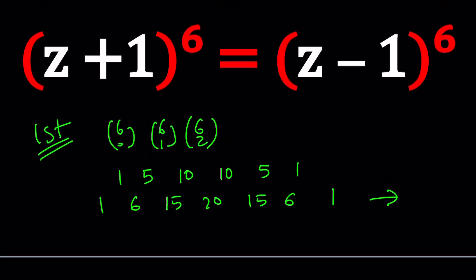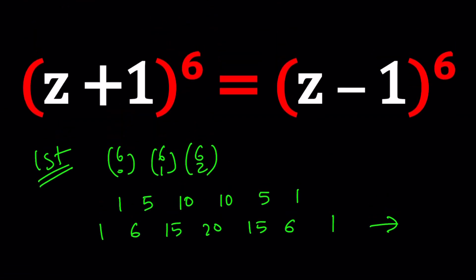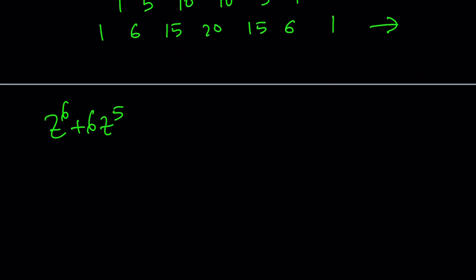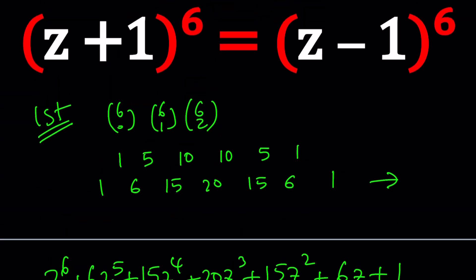So these are going to be my coefficients for A plus B to the sixth power. So this is what Z plus one to the sixth power is going to look like. It's going to be Z to the sixth plus six Z to the fifth. Since the next term is one I don't need to worry about it. Just write the powers of Z with the coefficients 15Z to the fourth and then plus 20Z to the third plus 15Z to the second.